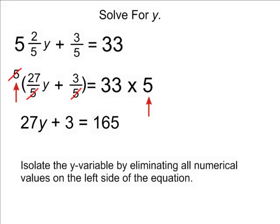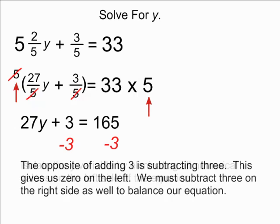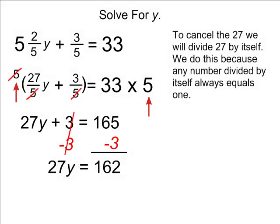Now we must isolate the y variable by eliminating all numerical values on the left-hand side of our equation. To eliminate the plus 3, we do the opposite of adding 3 which is to subtract 3. And we do the same thing on the right-hand side of our equation as well so we may balance our equation out.